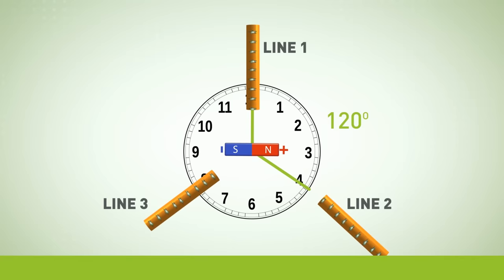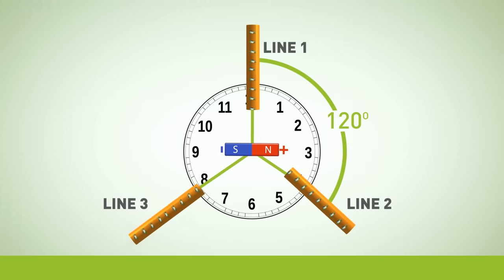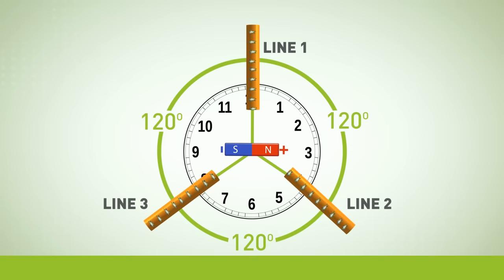So when you're at the 4 o'clock position in our example here, that's 120 degrees away from line one. And at the 8 o'clock position, it's 120 degrees away from both the 4 and 12 o'clock positions. The three lines are equally spaced around the circle.